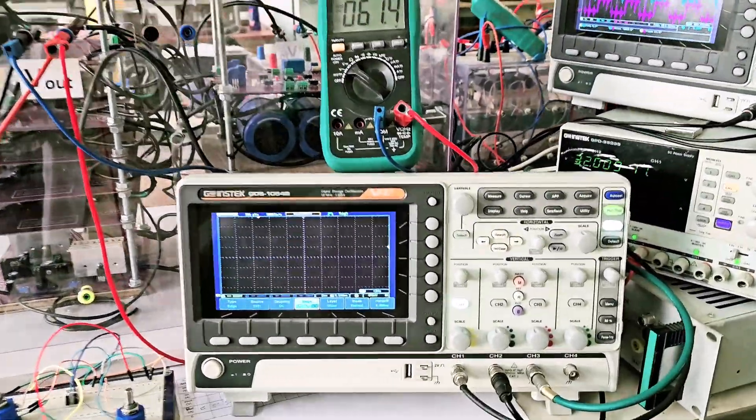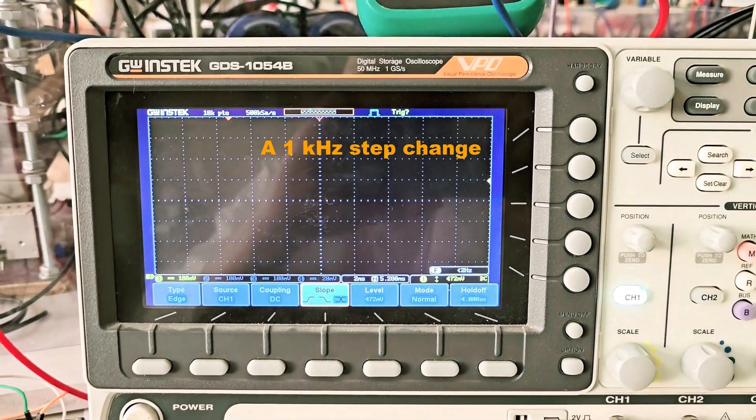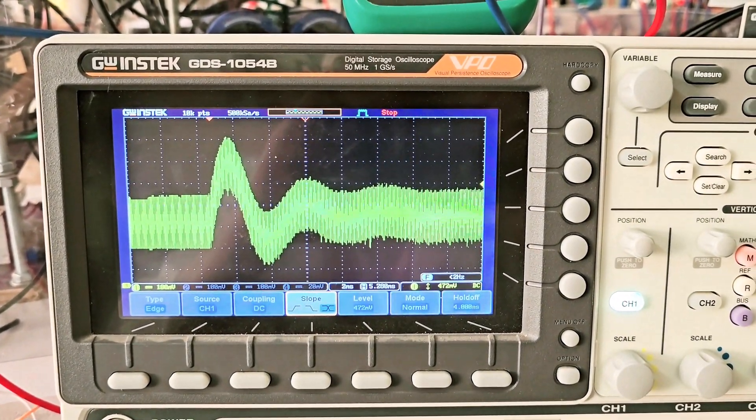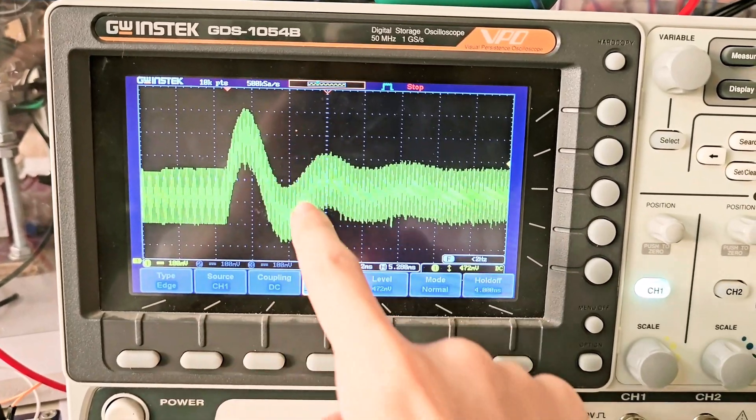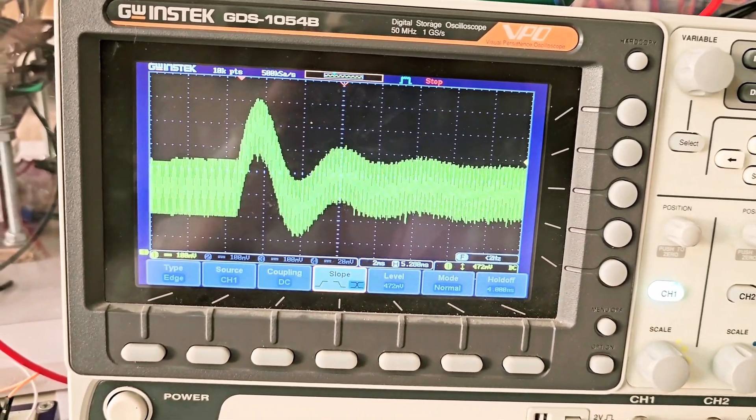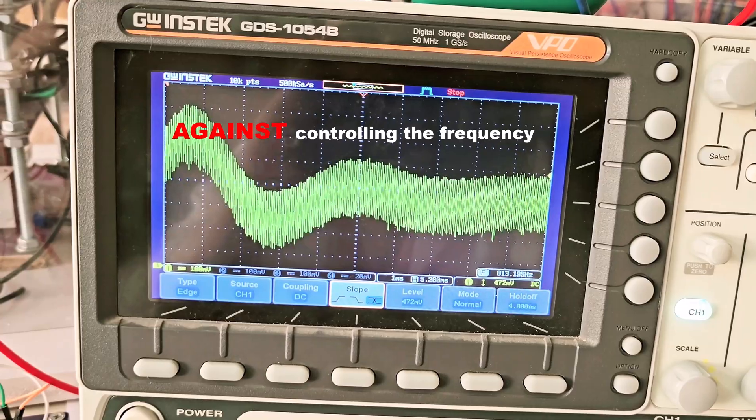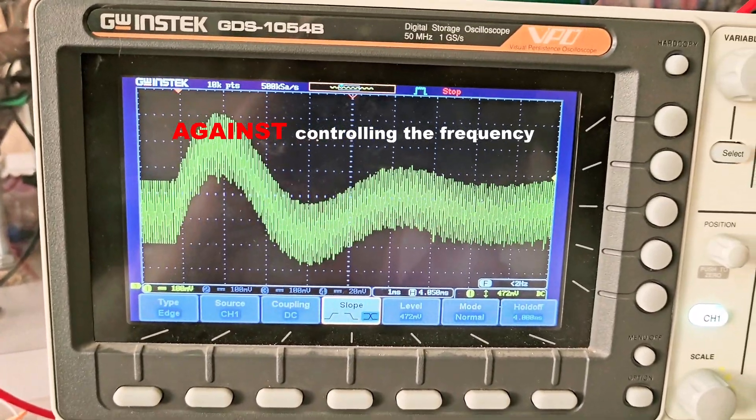However, as shown by our experiments, even small variations in switching frequency can cause transient responses in average current, disrupting the system. Therefore, we advise against controlling the frequency during operation unless necessary.